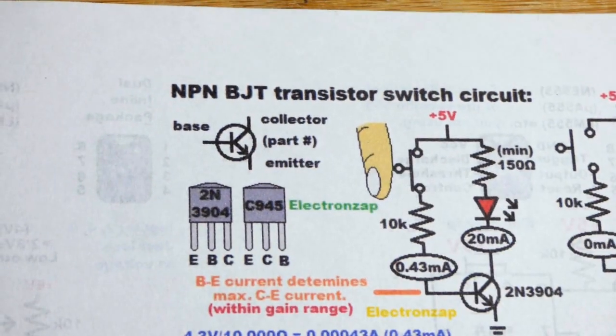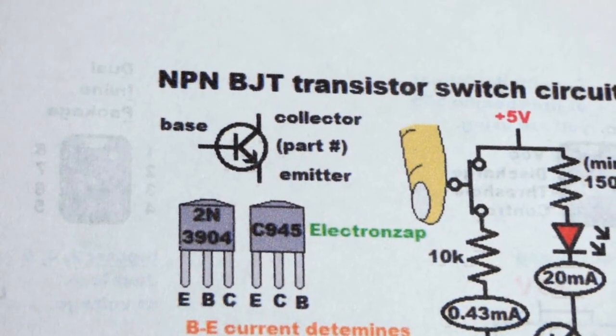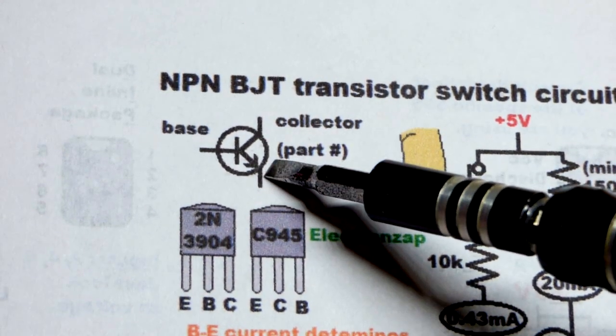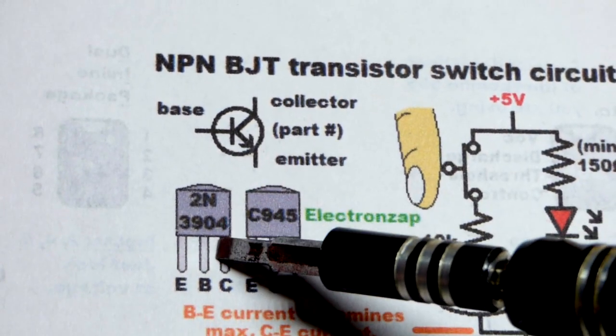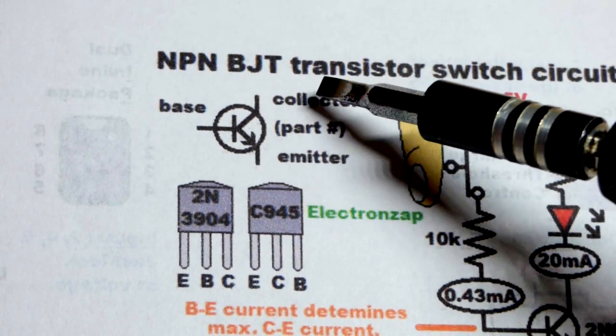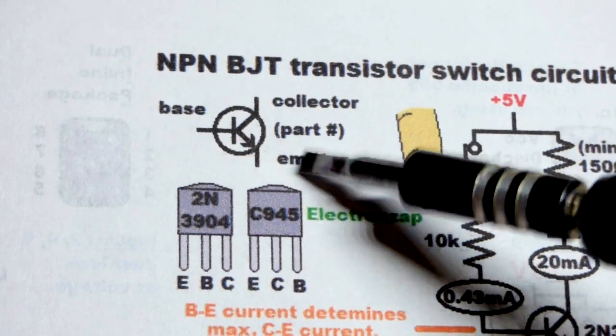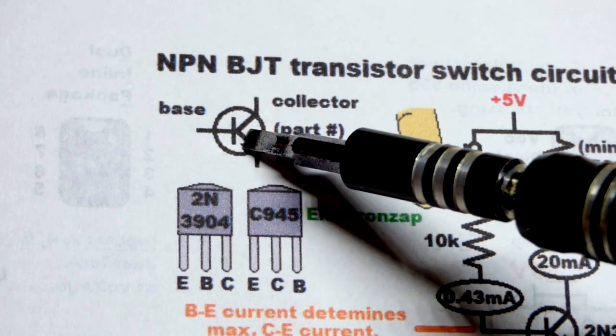But now we're going to look at how an NPN bipolar junction transistor works as a switch. So to begin with, here is the schematic symbol for an NPN bipolar junction transistor. Pretty much everybody uses this. I don't think I have ever seen a different schematic symbol. Transistors have three terminals. The bipolar junction transistor terminals are called collector, base, and emitter. And normally they're not labeled on the schematic, but that's where they are.